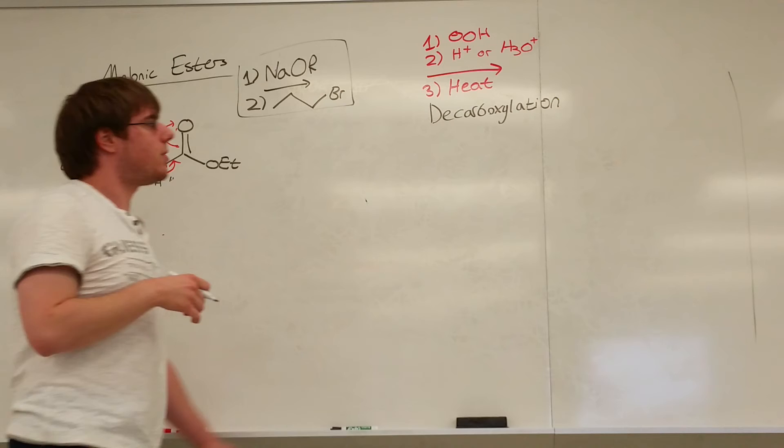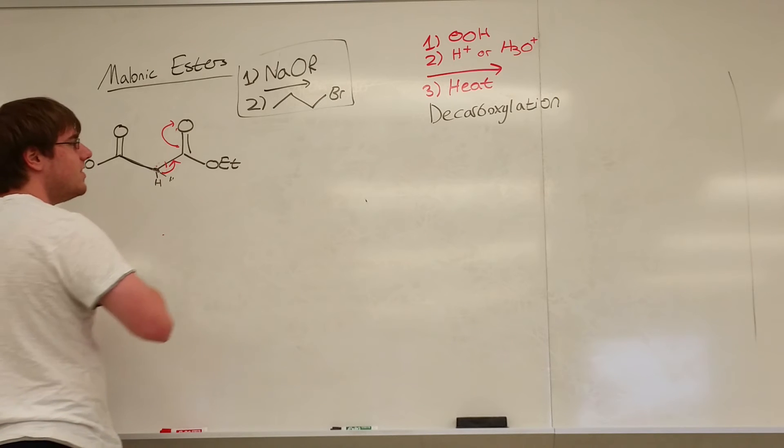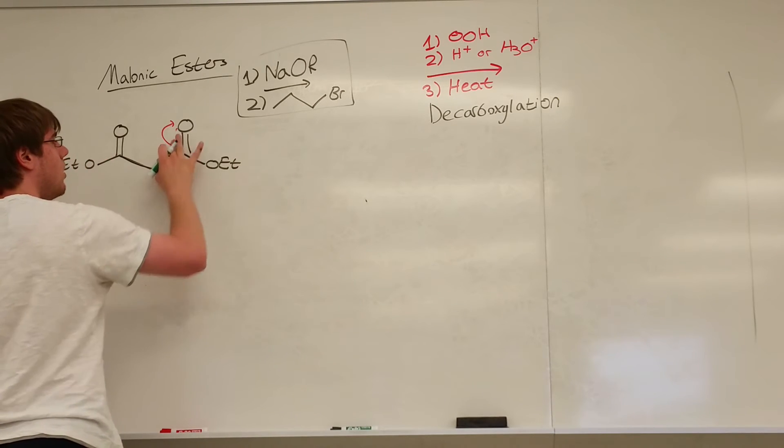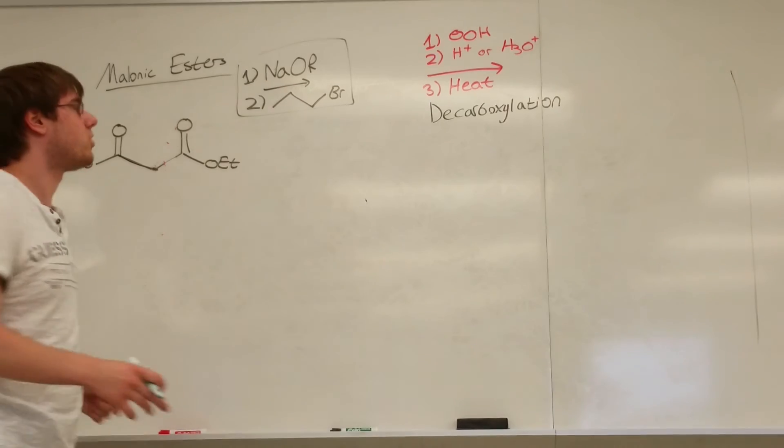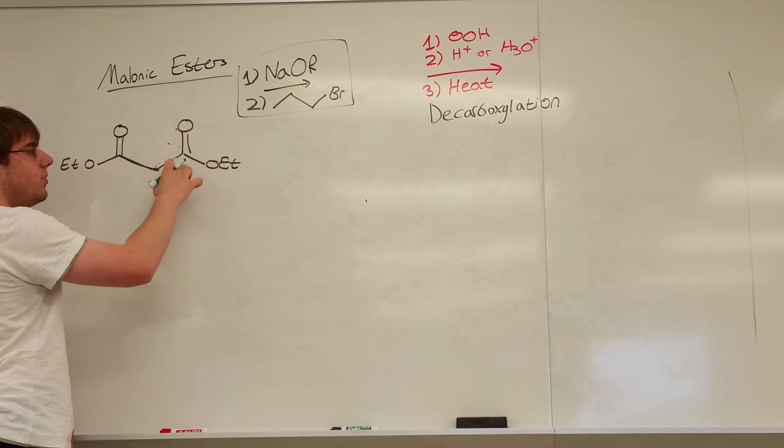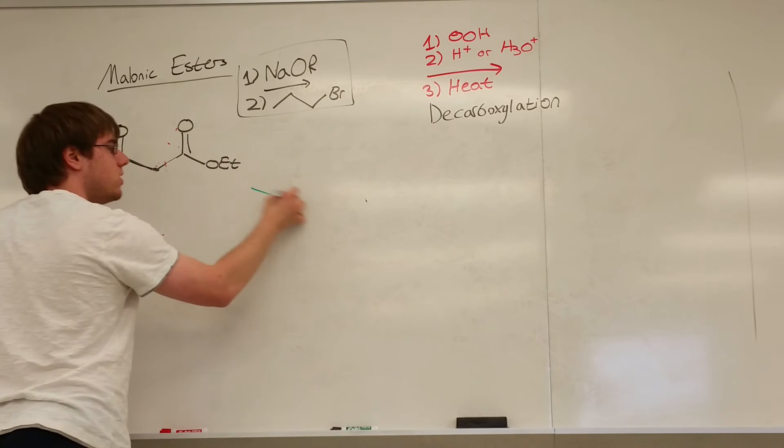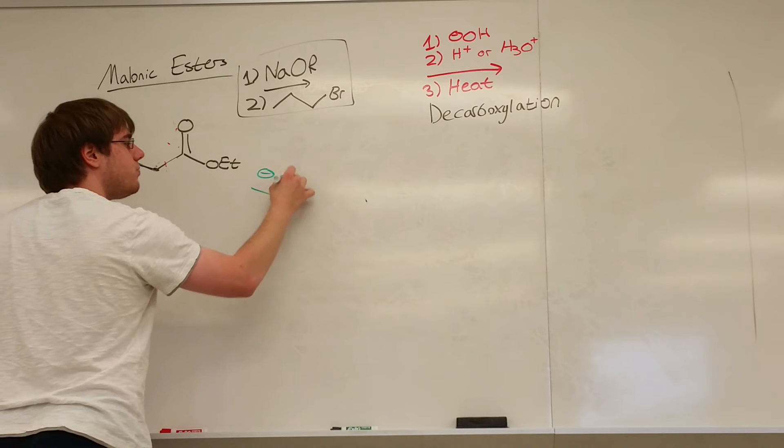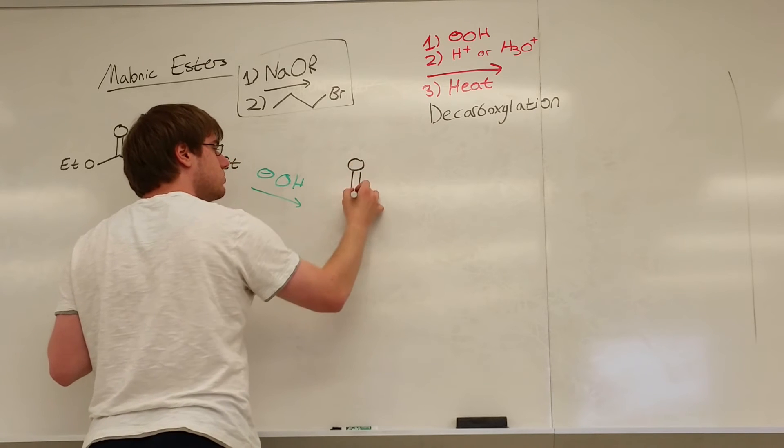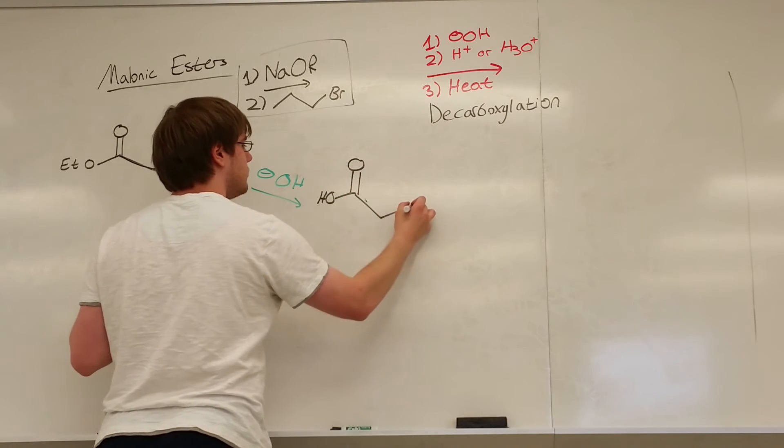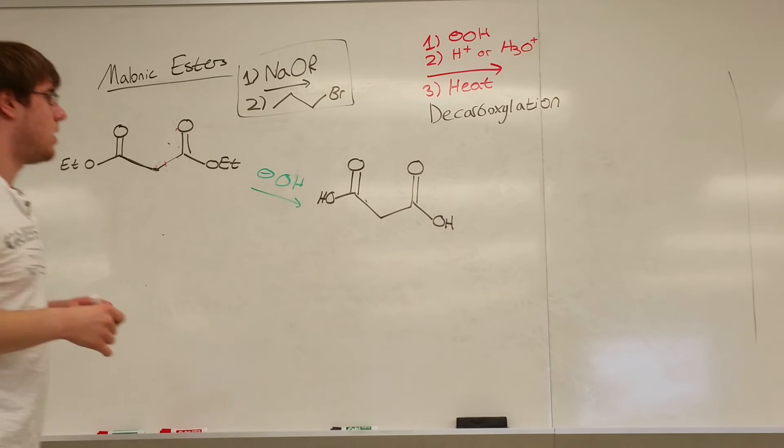And when you do decarboxylation, first what happens is the OH- will do exactly what we talked about when we said you need to use the same OR group. That OH- will attack your carbonyl. It'll swing up, and the OET will get kicked out. And it's going to do that to both of these. So after one step of OH-, or technically two, you would be left with two carboxylic acids.